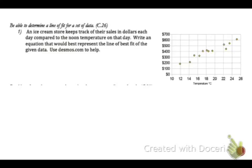Number 1 is one of those earlier concepts. It comes from Unit 4B Concept 26. So you need to be able to determine a line of fit from a set of data. An ice cream store keeps track of their sales in dollars each day compared to the noon temperature. Write an equation that would best represent the line of fit. You can use Desmos.com to help. But let me show you how you can just do it on your own. So remember a line of fit is going to be a line that is right through the middle of the data.